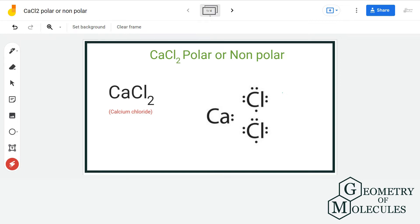Now we classify molecules into two broad categories: polar and non-polar. But calcium chloride doesn't fall in either category because CaCl2 is an ionic compound.